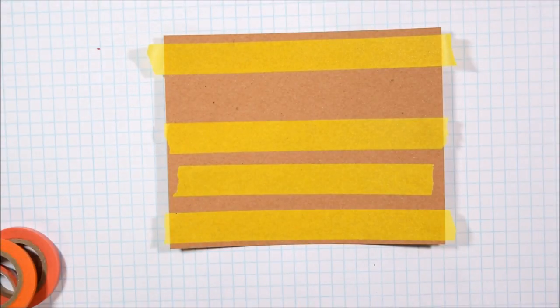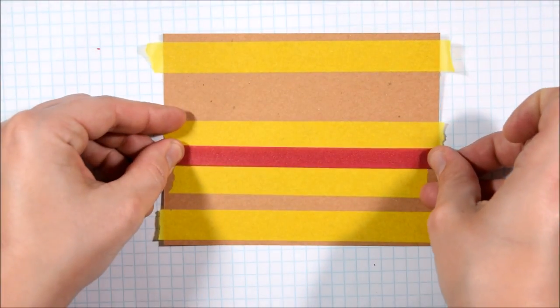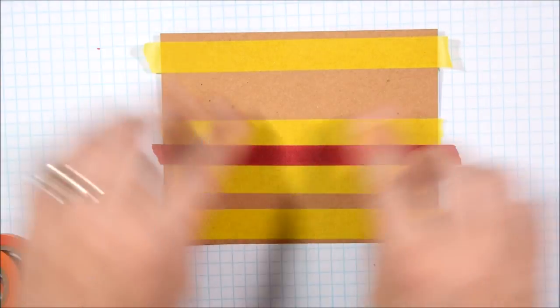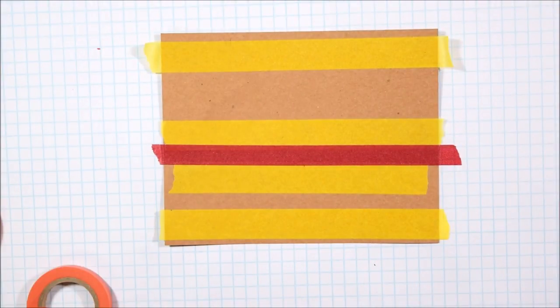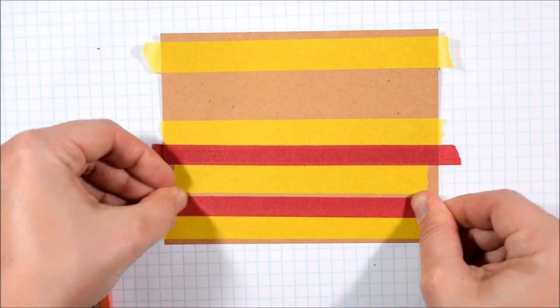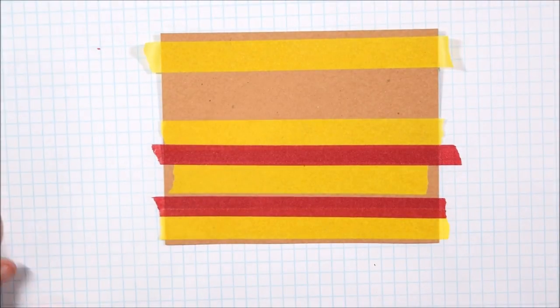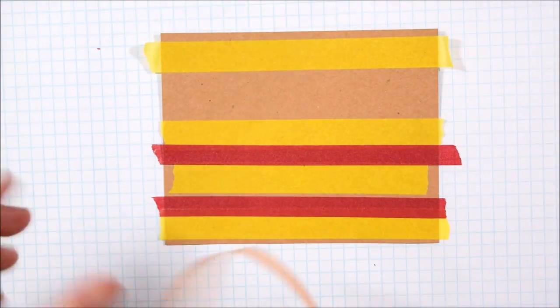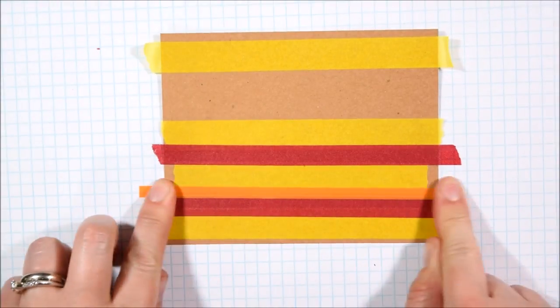I'm starting with some craft paper and I'm going to be using solid washi tape. Recently I showed you how you could use patterned washi tape to make your own patterned paper and die cut with it, but I thought it'd be cool to show you how to create your own pattern with solid washi tape.